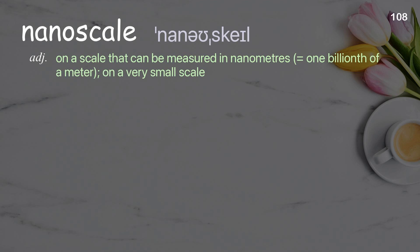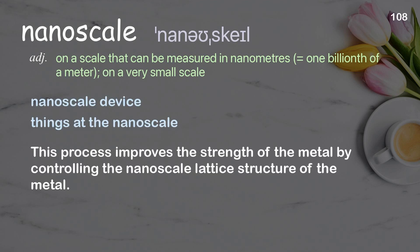Nanoscale: on a scale that can be measured in nanometers — one billionth of a meter — on a very small scale. Examples: nanoscale device, things at the nanoscale. This process improves the strength of the metal by controlling the nanoscale lattice structure of the metal.